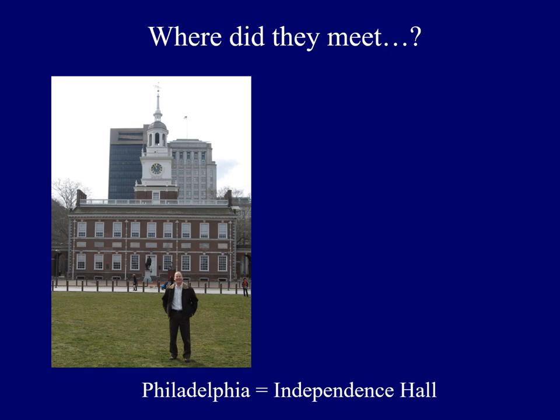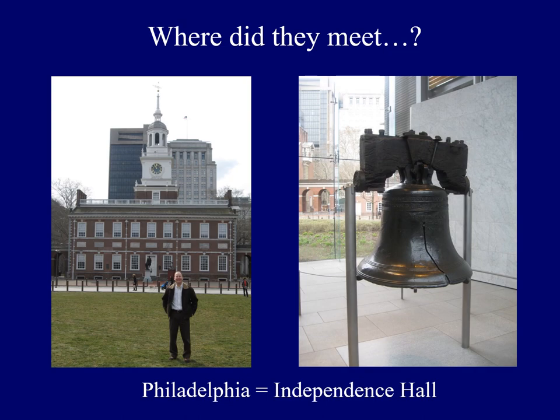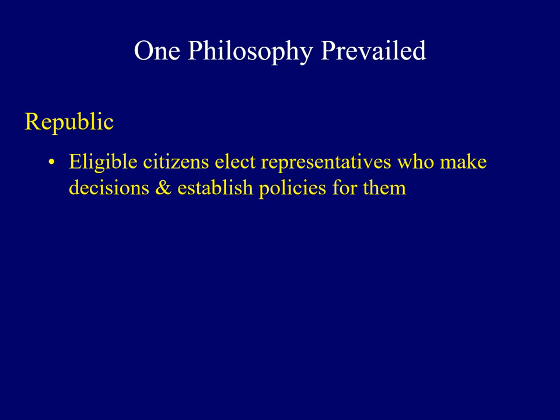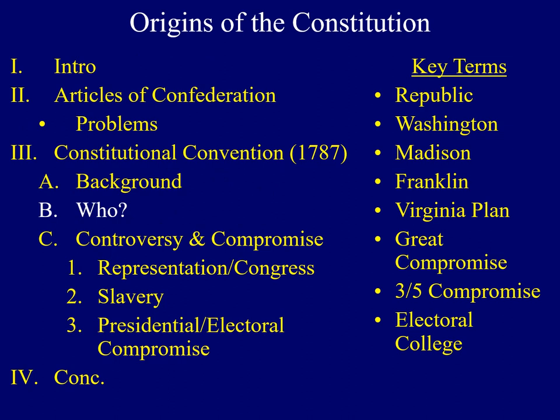Do you know where they met for the Constitutional Convention? It was in the nation's largest city, Philadelphia. The name of the building was Independence Hall, shown here in the image. One of the things I'll point out is the division among the delegates, but there was one philosophy that united all of them — they wanted to establish a republic. A republic is when eligible citizens elect representatives who make decisions and establish policies for them. In the United States, we live in a type of democracy, and that type is a republic. There were 55 delegates from several states who attended meetings in Philadelphia, and I'd like to highlight some of the important individuals who shaped the discussions at the Constitutional Convention.